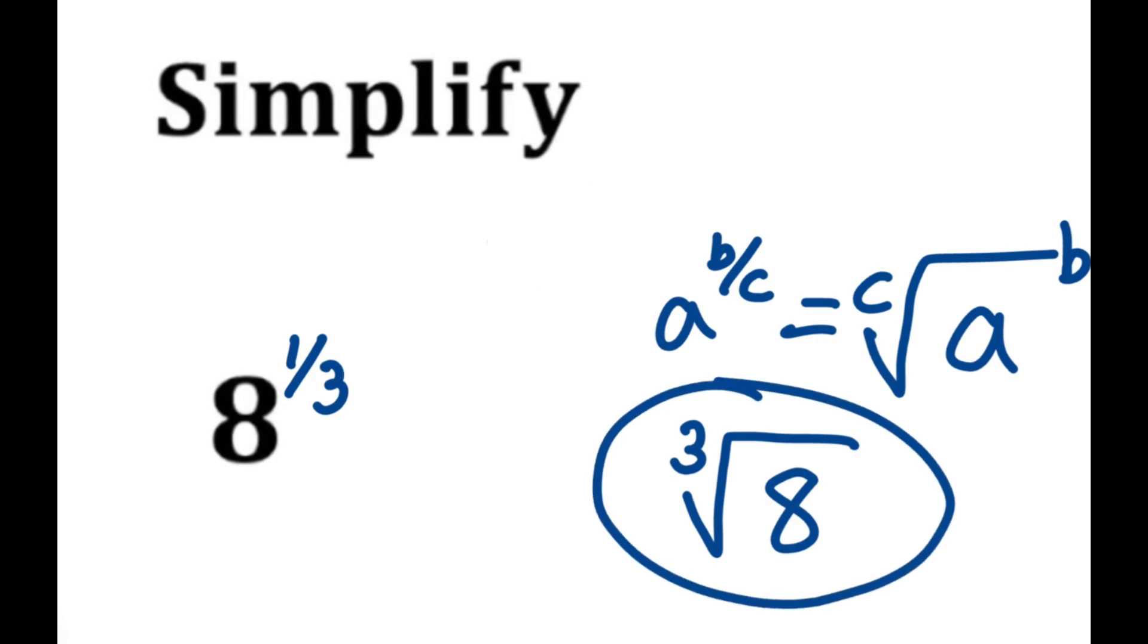Now we can simplify this. So this just means that x to the power of three is equal to eight. X to the power of three or two to the power of three is eight, so our answer here is going to be two.